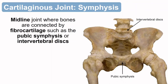In a symphysis, which is secondary or more permanent, the articular surfaces of the bone maintain their hyaline cartilage, but the binding cartilage in between them is fibrocartilage. That important distinction is that fibrocartilage is binding these together. We find symphyses typically right along the midline — the intervertebral discs of the back as well as the pubic symphysis in the pelvic girdle.